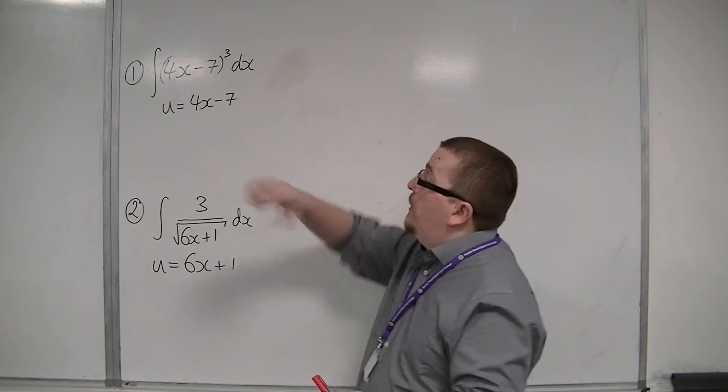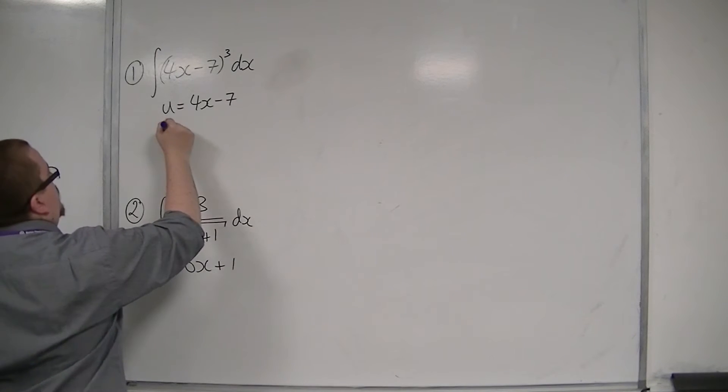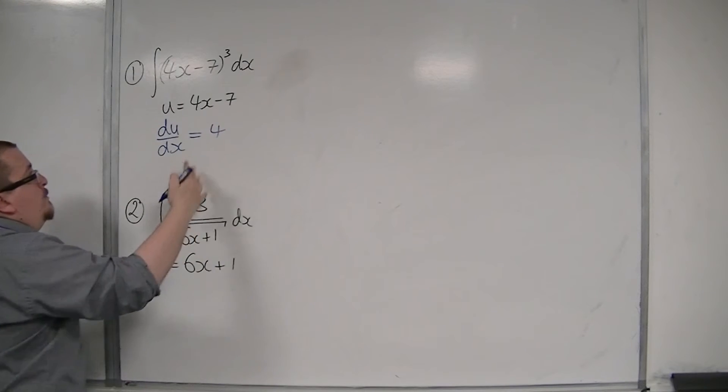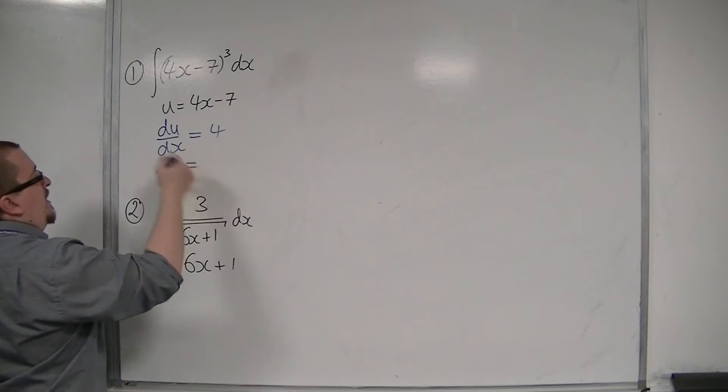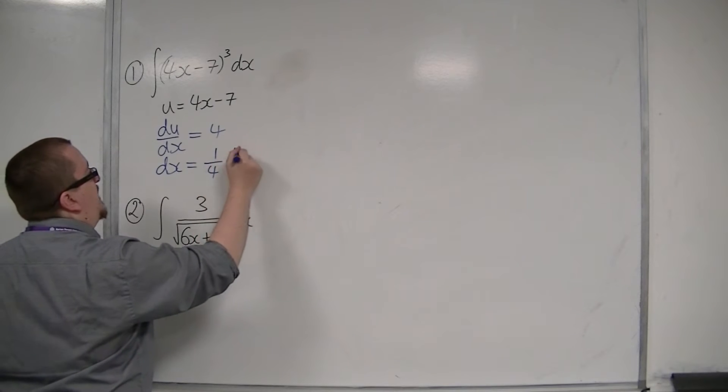So we just always start off with differentiating u. So we find du by dx, that's equal to 4. Then we want to rearrange that to get dx equals. So we're going to multiply both sides by dx, divide both sides by 4, so I get 1 quarter du.